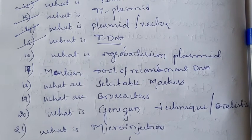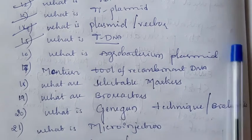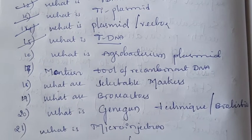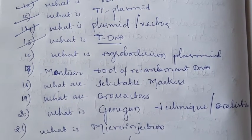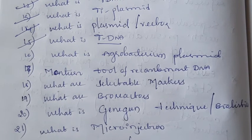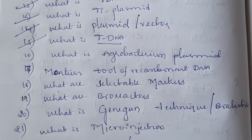Next: what is Agrobacterium plasmid? Agrobacterium plasmid is present inside the Agrobacterium species, Agrobacterium tumefaciens, which is able to cause the crown gall disease.